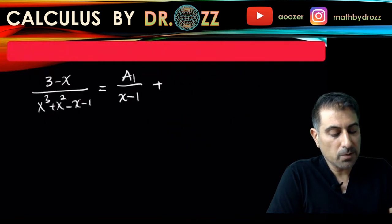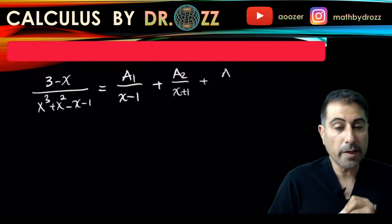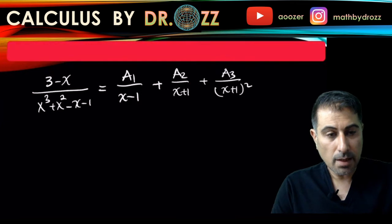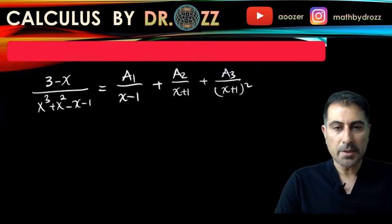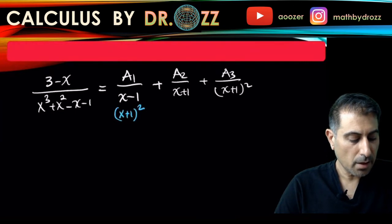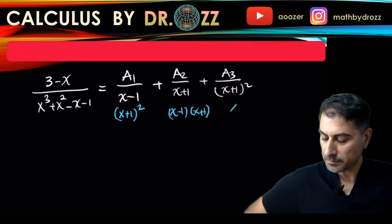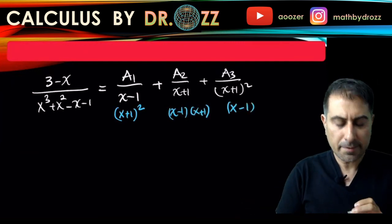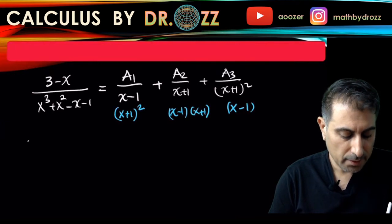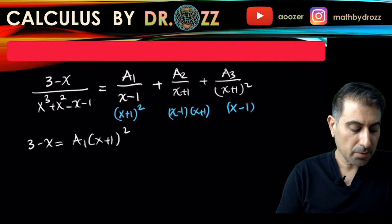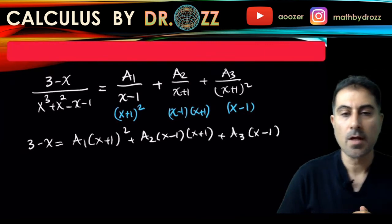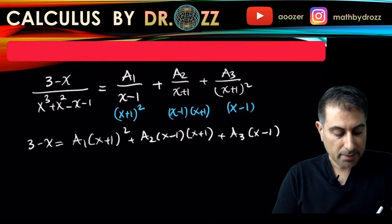For (x minus one), I put A1 over (x minus one). For the (x plus one) squared factor, I have two fractions: A2 over (x plus one) and A3 over (x plus one) squared. Missing one of those would give a wrong answer. Multiplying through by the common denominator (x minus one)(x plus one) squared, I write only the numerators: 3 minus x equals A1 times (x plus one) squared plus A2 times (x minus one)(x plus one) plus A3 times (x minus one).